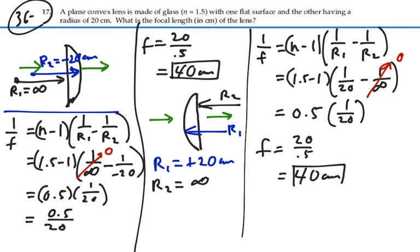So either way, you look at this lens, you end up with a positive 40 centimeters for your focal length. It's a converging lens that's thicker in the middle, and hence has a positive focal length.